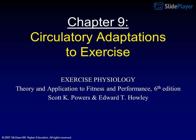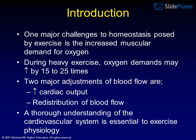Chapter 9: Circulatory Adaptations to Exercise. From Exercise Physiology Theory and Application to Fitness and Performance, 6th Edition, by Scott K. Powers and Edward T. Halley. Introduction: One major challenge to homeostasis posed by exercise is the increased muscular demand for oxygen. During heavy exercise, oxygen demands may rise by 15 to 25 times. Two major adjustments of blood flow are cardiac output and redistribution of blood flow. A thorough understanding of the cardiovascular system is essential to exercise physiology.